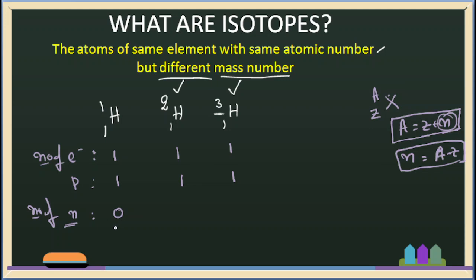For H-2: atomic number is 1, atomic mass is 2, so 2 minus 1 gives 1 neutron — hydrogen-1,2 has 1 neutron. For H-3: the number of neutrons is 2, because 3 minus 1 gives us 2.